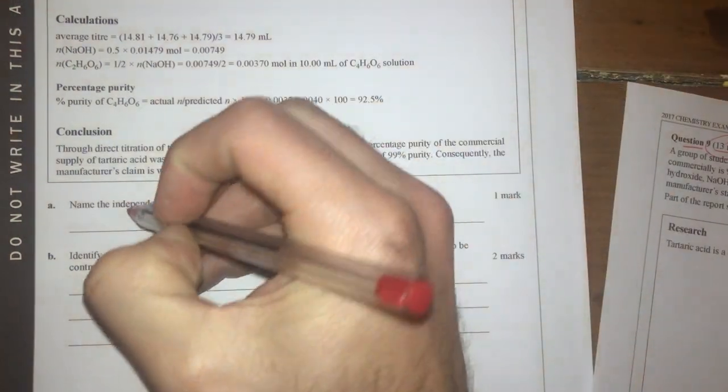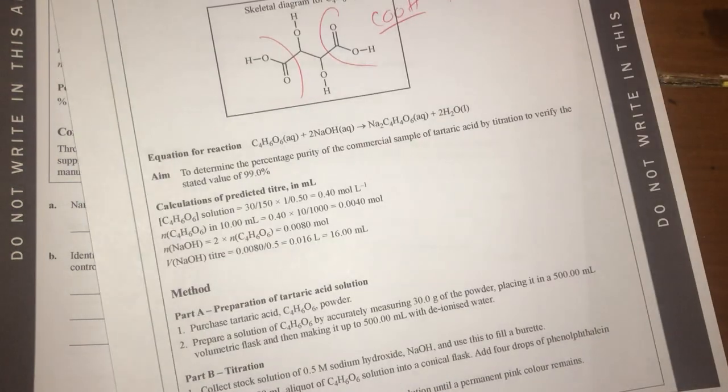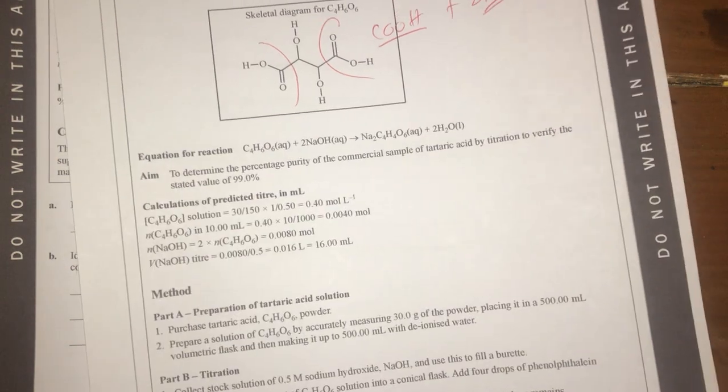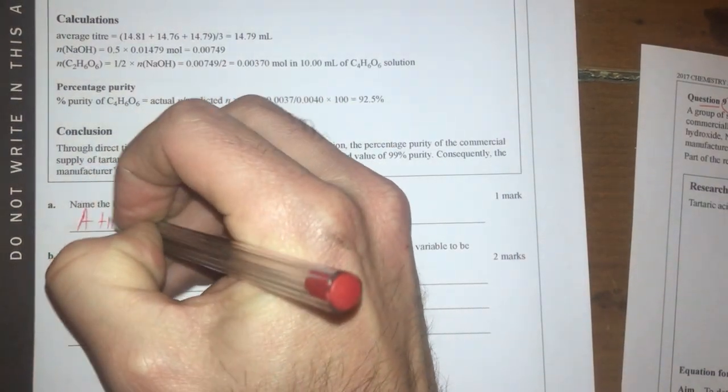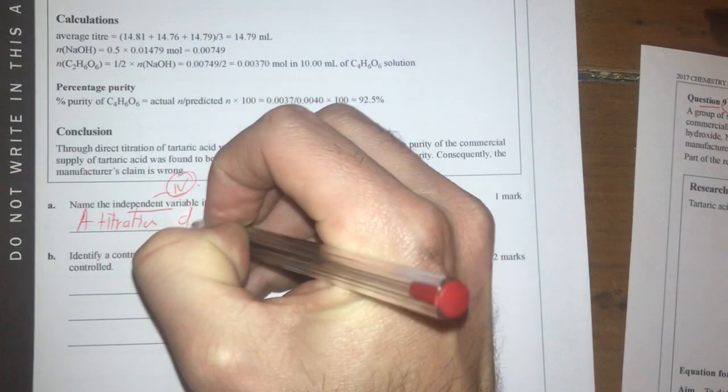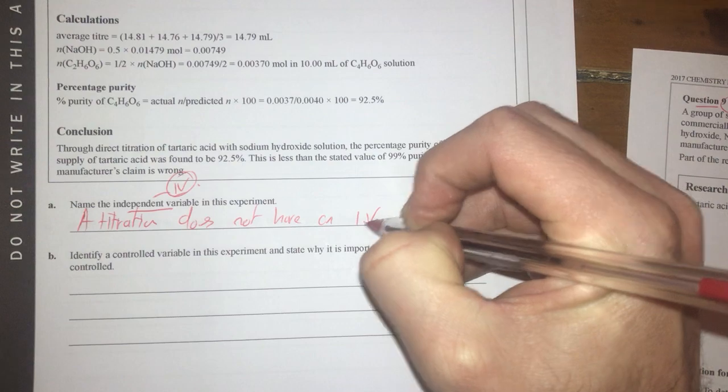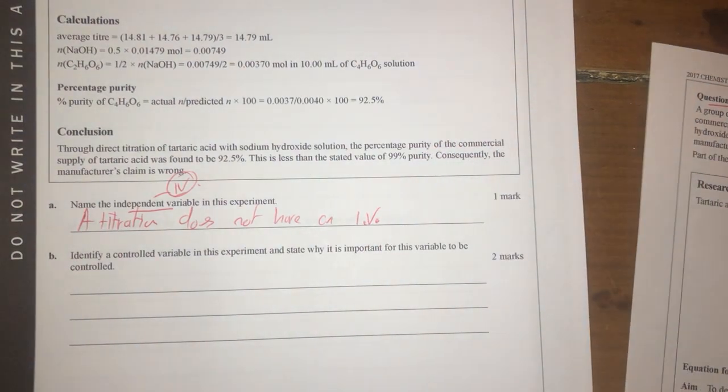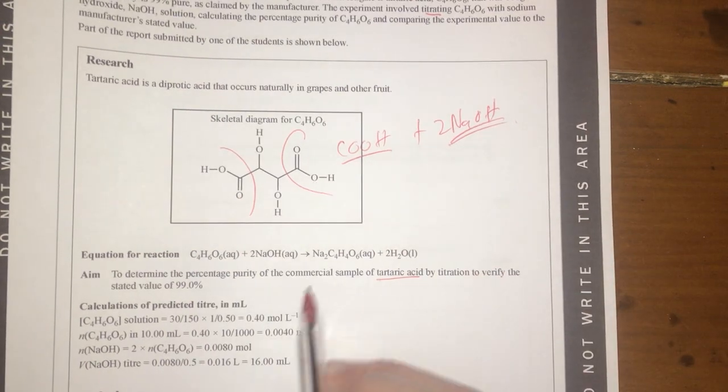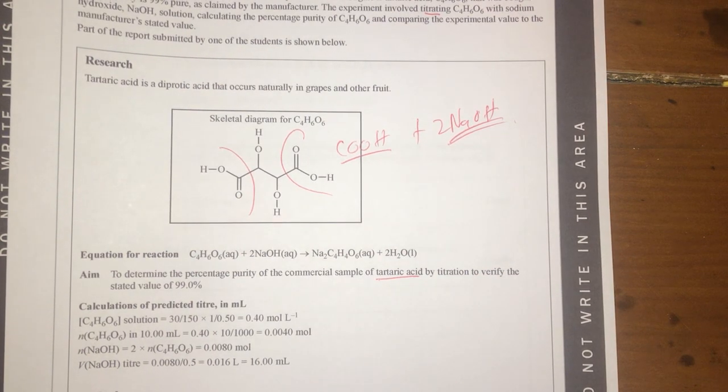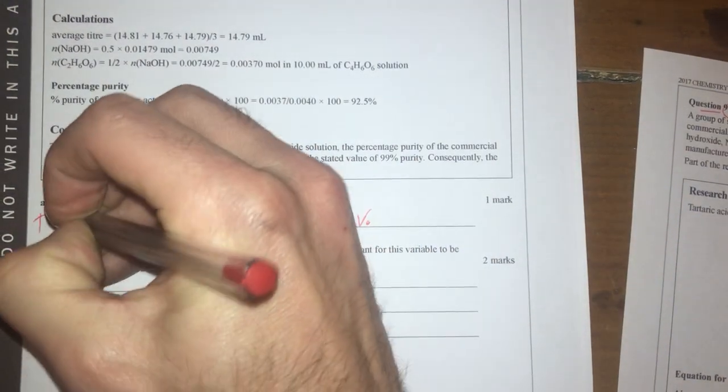So independent variable is the thing that I vary, so am I changing anything in this experiment? So what am I doing? I'm doing a titration. A titration does not have an independent variable because you're not using different types of tartaric acid. We're using the same commercial tartaric acid. So in this case, I'm going to say this titration.